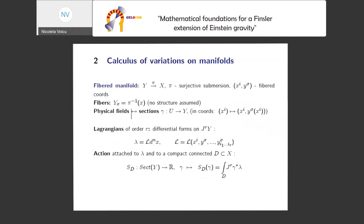First of all, what is our toolkit? It's calculus of variations on manifolds. We are going to formulate our theory on fibered manifolds. A fibered manifold is, by definition, a triple consisting of two smooth manifolds related by a surjective submersion. So that's something more general than a fiber bundle in the sense that we have fibers, but we don't assume any structure on the fibers. They are totally free.